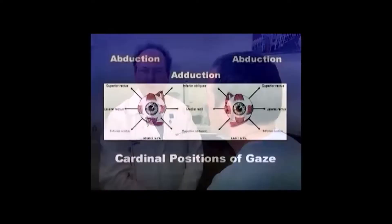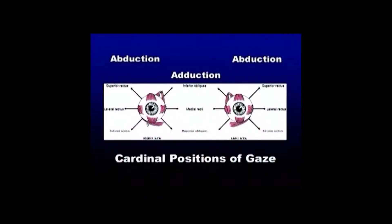We're now going to continue to test extraocular muscle function by means of evaluation of the cardinal positions of gaze. Because the rotational action of the obliques and vertical recti muscles cannot be easily assessed, the eye must be moved into six diagnostic cardinal positions of gaze that best isolate the vertical actions of these muscles in order to test their innervations.